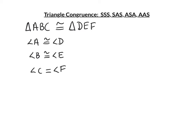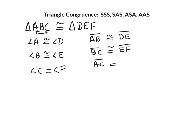When you line up the congruent angles, you can even tell which sides are congruent. For example, AB would be congruent to DE because they're the first two letters on each side. BC, the last two letters in the first statement, is congruent to EF, the last two letters in the second. And AC, the outside two, would be congruent to DF.